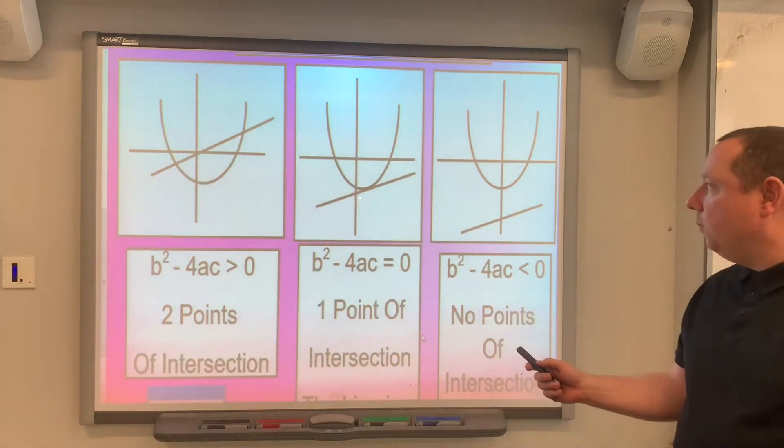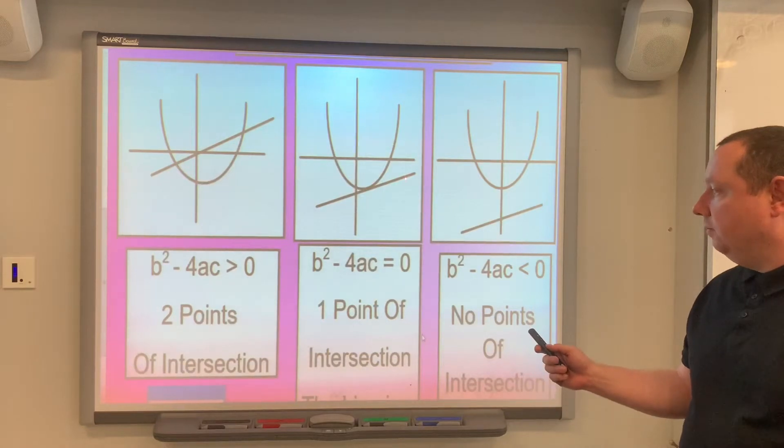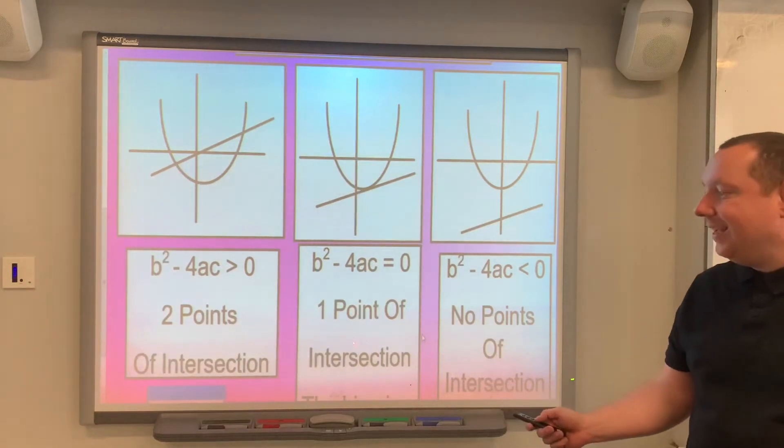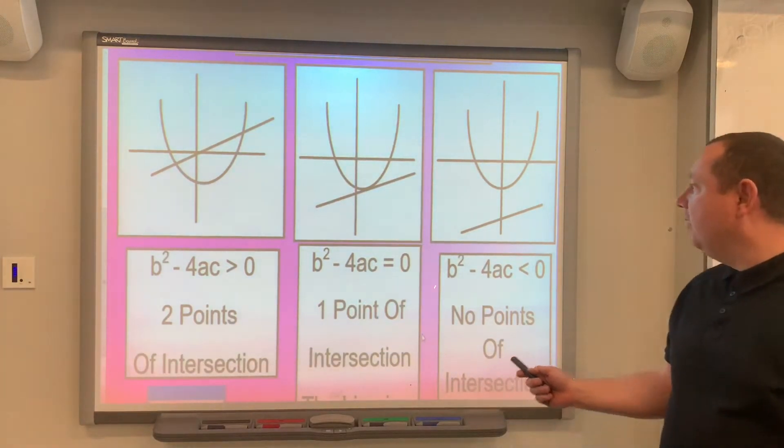But if it's only got one point of intersection, that point is called a tangent. And that means that if b squared minus 4ac equals zero, the point is a tangent or one point of intersection.